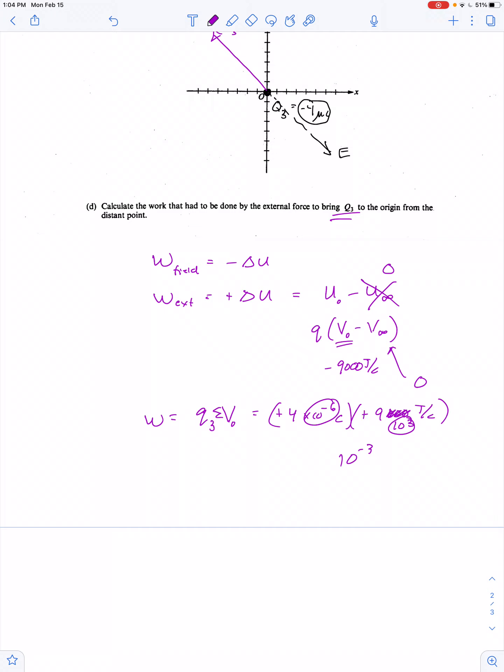These negatives cancel out, 4 times 9 is 36, so 36 times 10 to the negative 3rd is 0.036 joules of work were done to bring that charge to the origin. And that's it, let's move on to another example problem.